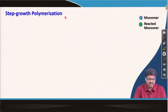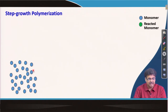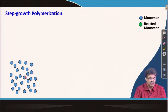Next, we talk about step growth polymerization. In this case, notice we are not showing any initiator molecules — we do not need an initiator molecule in this mechanism, though sometimes we may require a catalyst to make the reaction faster. The monomers typically have functional groups; if they are complementary, they react with each other and we start forming dimers, trimers, tetramers, and so on.